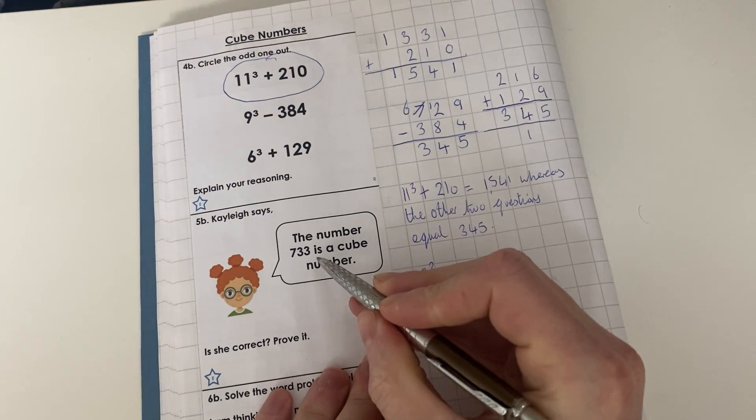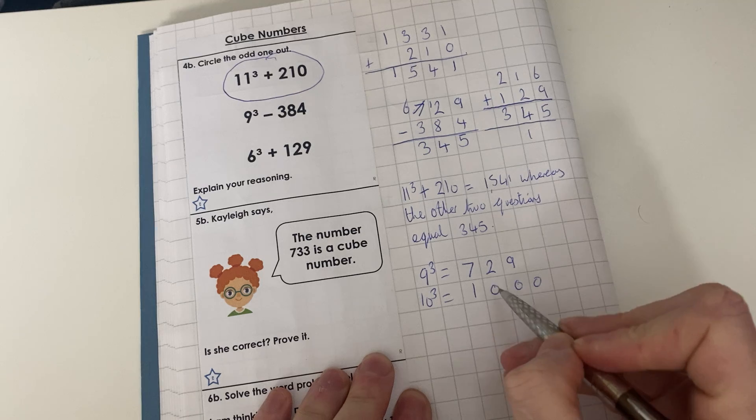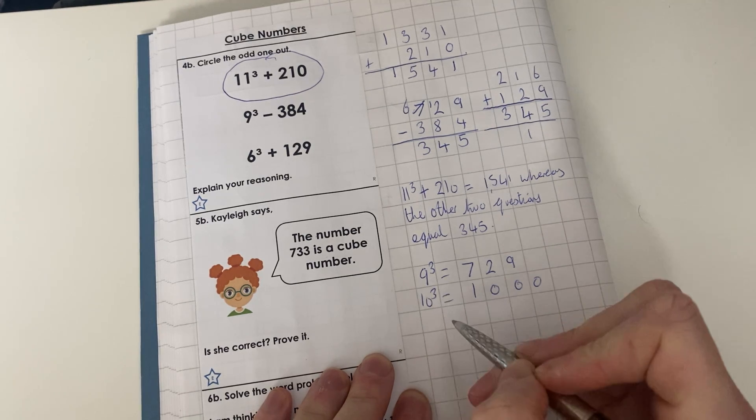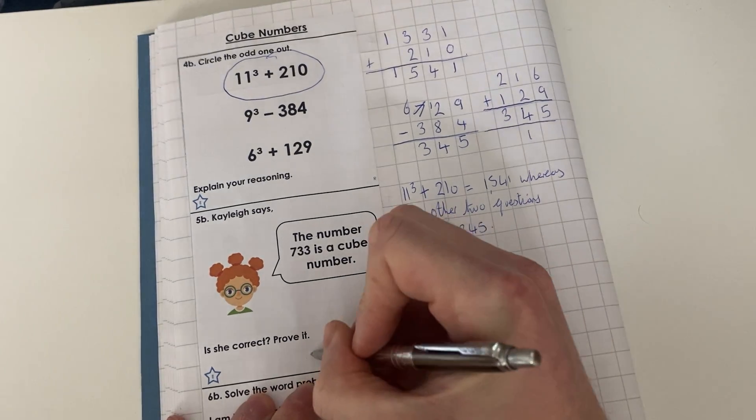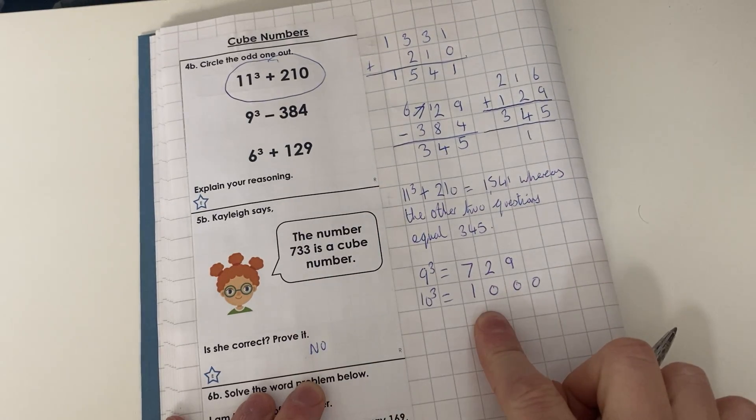733 is between these two numbers, and as you can see there's not a number in between 9 or 10 that we cube. So is she correct? No. And we've proved it by showing that.